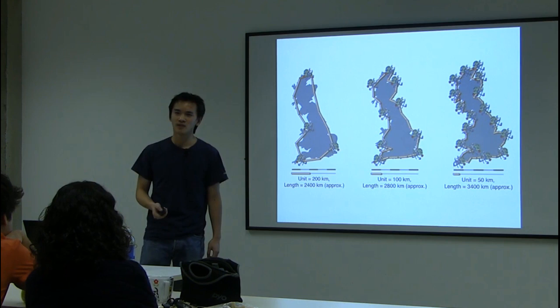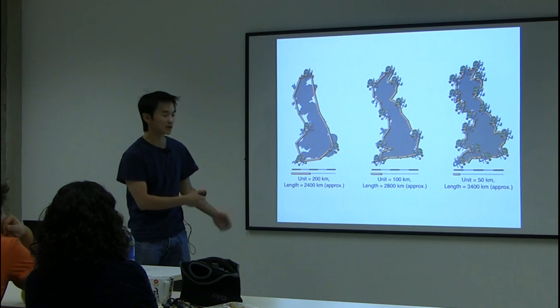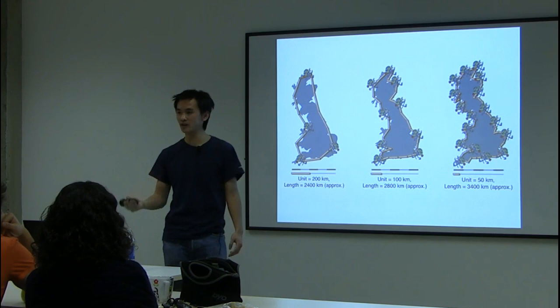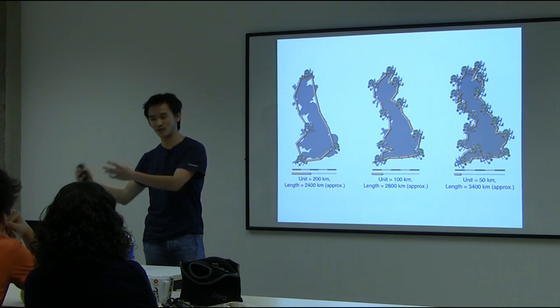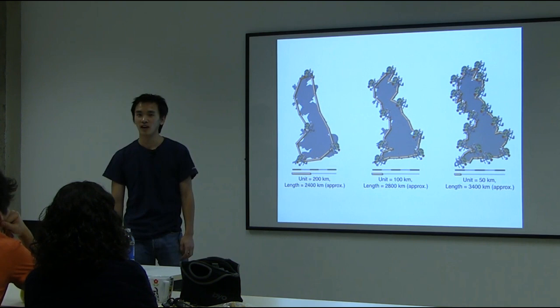It doesn't seem like a difficult question, right? So how do you measure the length of the British coastline? One way of doing that is to have someone walking the distance and to count the number of steps he would have made — and hence, using a mathematical trick called multiplication, you deduce the total distance one would have walked.